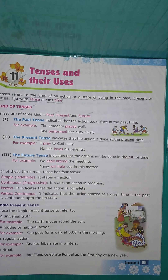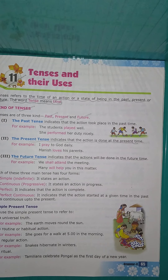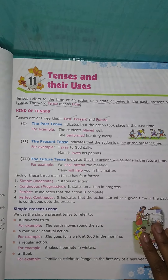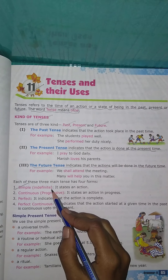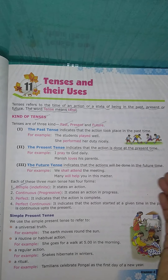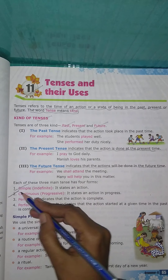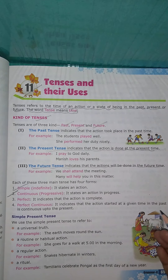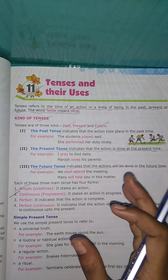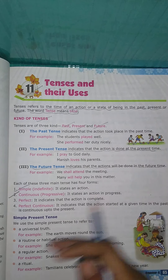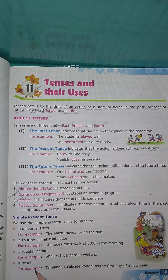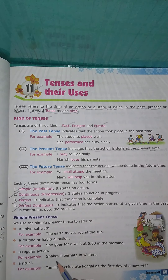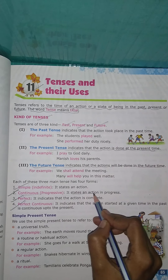Each of these three main tenses has four forms. These are: simple past, present, or future tense; continuous or progressive form — the continuous tense covers present, past, and future; perfect tense; and perfect continuous tense. The continuous tense states an action in progress.